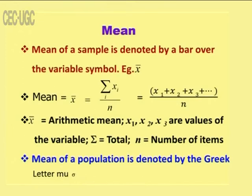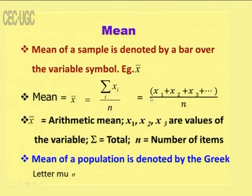Throughout statistics we use two terms: population and sample. The population includes all the items being considered — for example, the population of India is around 130 crores, and it is not possible to take the entire population for an experiment or survey. Therefore, we select a sample. Ideally, the standard deviation and mean of the sample must be equal to the population average and standard deviation. Throughout statistics, we use mu for the population and x-bar for the sample.